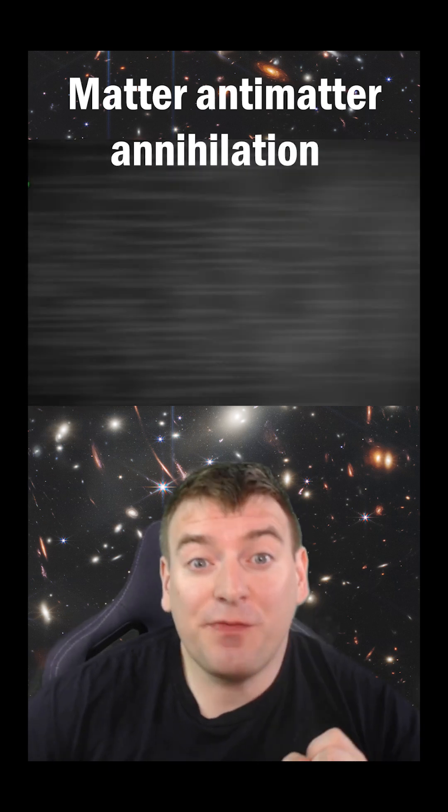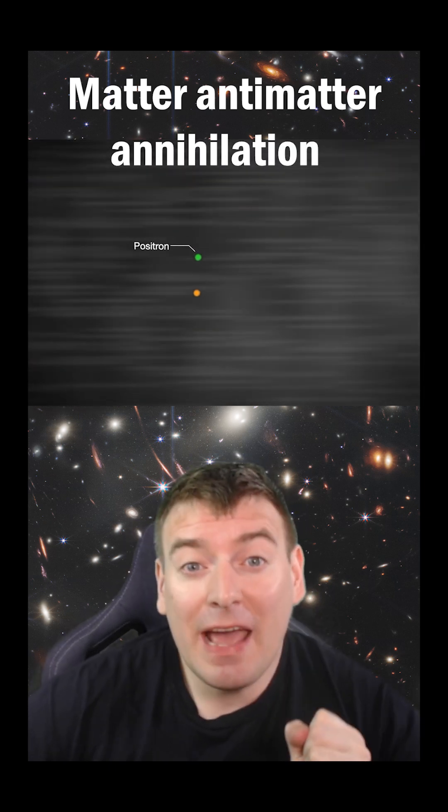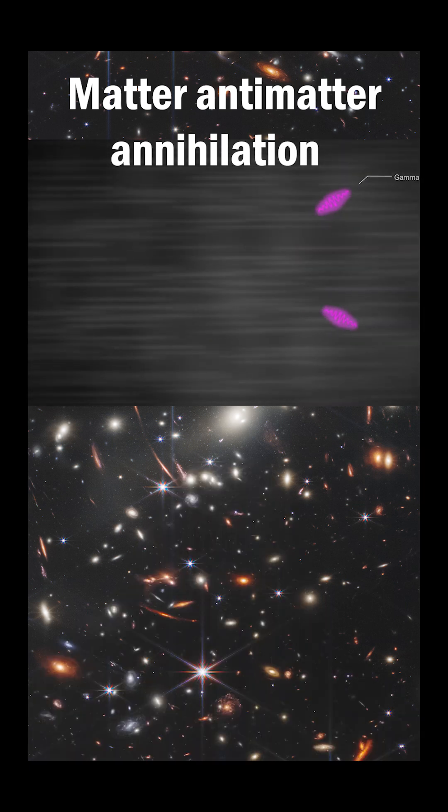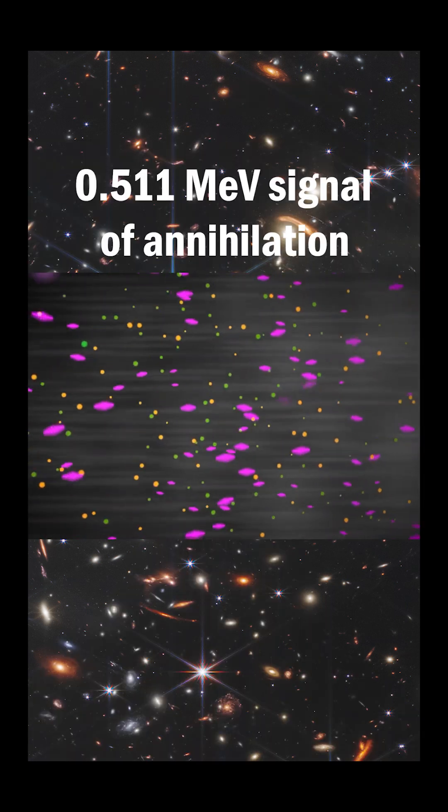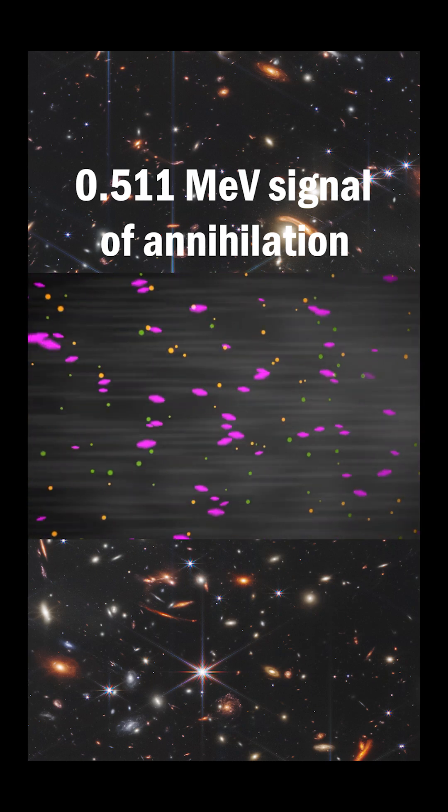Scientists believe that this feature could be caused by the annihilation of electrons with their antimatter counterparts positrons in the jets of the boat. When an electron and a positron collide, they annihilate, producing a pair of gamma rays with the characteristic energy of 0.511 MeV.